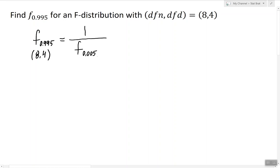However that's not the only change - the degrees of freedom also change. So instead of 8, 4 we now have to look for the F value F alpha for 4, 8 curve.